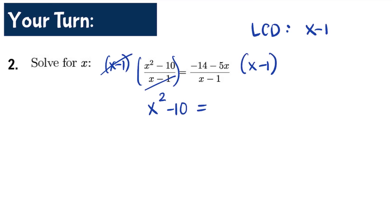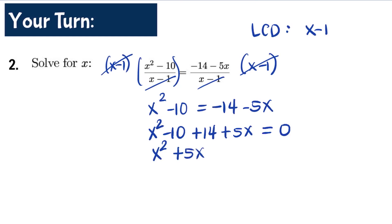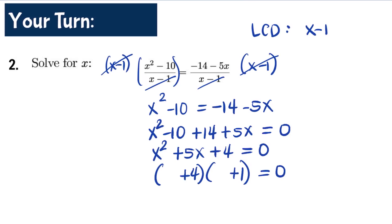We transfer all terms to the left: x² - 10 + 14 + 5x = 0, giving x² + 5x + 4 = 0. The best method is factoring. We find factors of 4 that sum to 5: that is 4 and 1. So the factors are (x+4)(x+1) = 0.